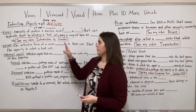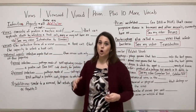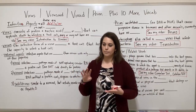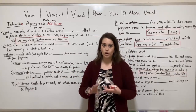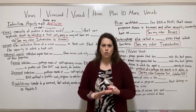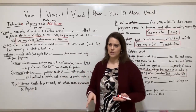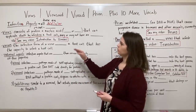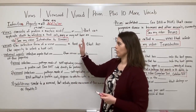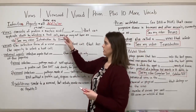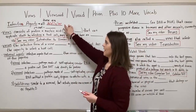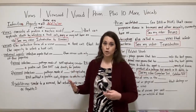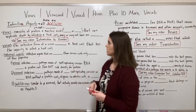Certainly there are infectious agents that are cellular — bacteria, helminthic worms, fungal pathogens, protozoan pathogens, and so on. But here we're just talking about infectious agents that are acellular, so not composed of cells, simpler than cells.